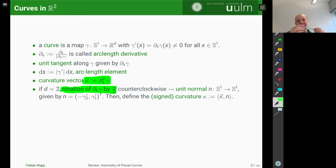And we can define a unique normal by a rotation of the unit tangent by π over two counterclockwise. So you take the tangent vector and you rotate it. And that way you end up with a unit normal along the curve.